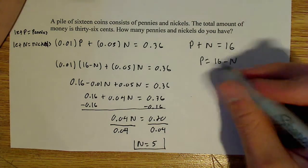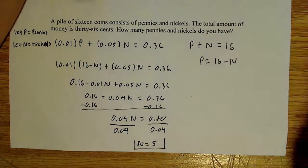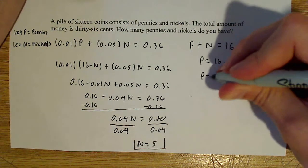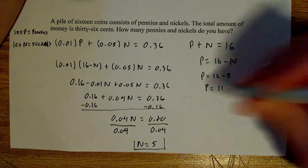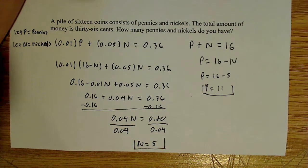And now if we want to know P, we can simply get that by doing 16 minus 5. So P is equal to 16 minus 5. So P must equal 11. Alright, very simple.